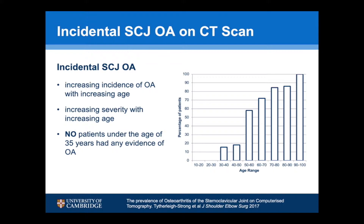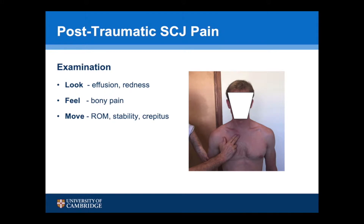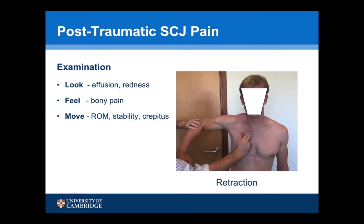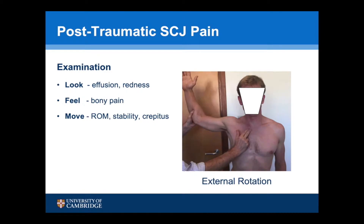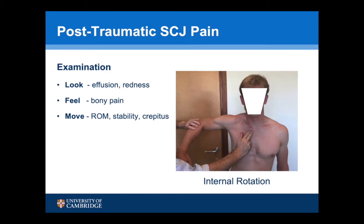On examination of the joint, it's important to look for any evidence of swelling, effusion, or erythema around the joint. Bony palpation of both the clavicular and sternal sides and over the joint itself — looking for any disc pain. Movements of the sternoclavicular joint include protraction, retraction, abduction and elevation, and external and internal rotation of the joint with the arm at 90 degrees. Whilst doing all of these movements, it's important to have your fingers over the joint to feel for any crepitus or discomfort.